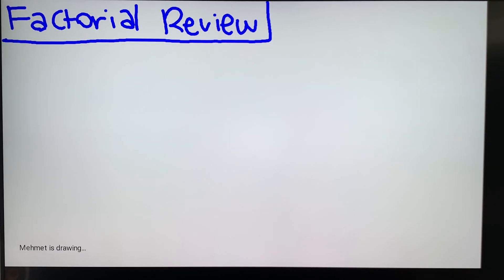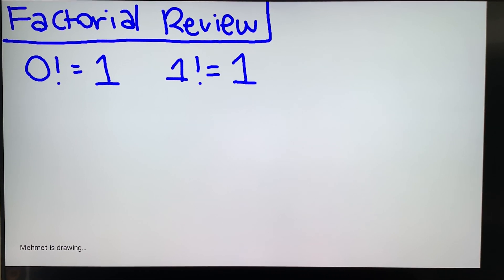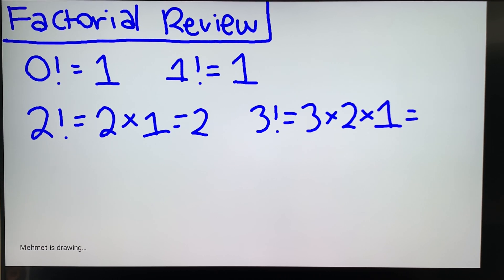Before we begin the trick, I just want to review factorial. So 0 factorial equals 1, 1 factorial is 1, 2 factorial is 2 times 1, which is just 2, 3 factorial is 3 times 2 times 1, and that 1 doesn't really matter, which is 6.